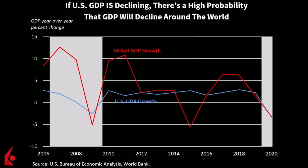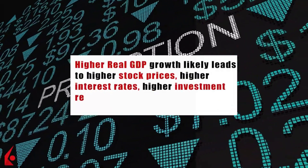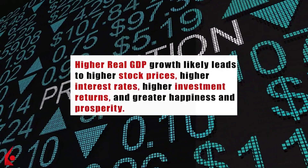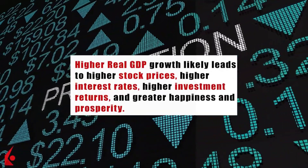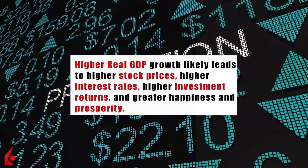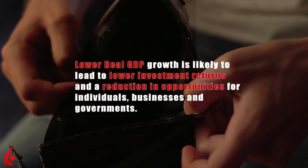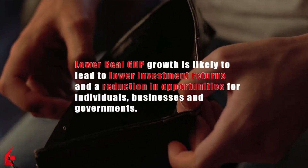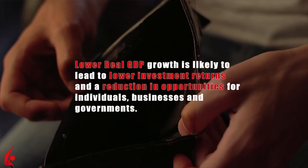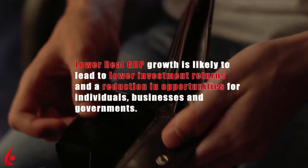The US makes up four percent of the global population but a whopping 25 percent of global economic activity. If GDP in the US is declining, there's a high probability that GDP will decline around the world due to the massive influence US consumers, businesses, and investors have. Higher real GDP growth likely leads to higher stock prices, higher interest rates, higher investment returns, and greater happiness and prosperity. Lower real GDP growth is likely to lead to lower investment returns and a reduction in opportunities for individuals, businesses, and governments.